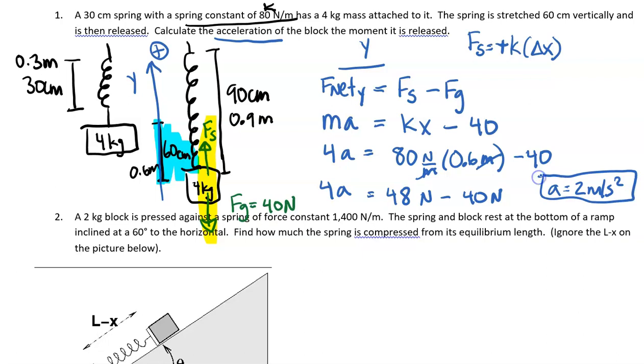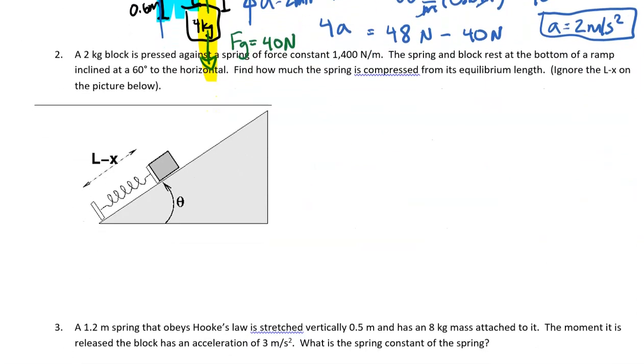And this turns out to be a positive number, which makes sense. This spring system is going to want to accelerate upwards at 2 meters per second squared because it's pulled down. If it was pushed up, the opposite kind of situation would essentially happen. So let's go ahead. If you feel great on that, feel free to jump into some practice problems. But I'm going to do one more video on here with a spring system on a ramp if you want to follow along.